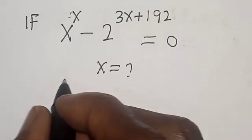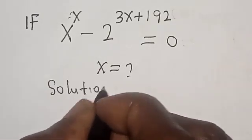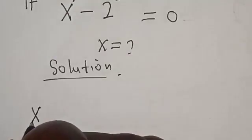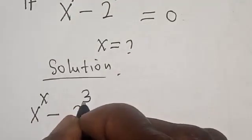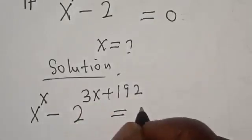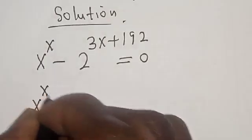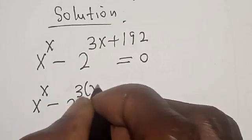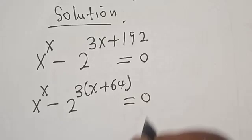Let's start with the solution. We have s raised to power s minus 2 raised to power 3s plus 192 equals 0. We can rewrite this as s raised to power s minus 2 raised to power 3 times (s plus 64) equals 0, since 3 times 64 is 192.